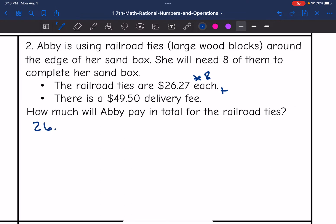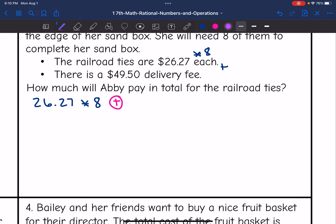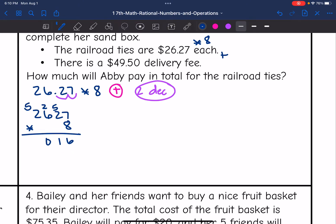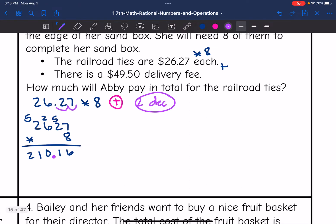Let's start with 26.27 times eight. A positive times a positive will give me a positive, and I have two decimals that I will add back at the end. So now we're going to do 2627 times 8. Eight times 7 is 56, eight times 2 is 16 plus 5 is 21, eight times 6 is 48 plus 2 is 50, and then eight times 2 is 16 plus 5 is 21. And I have to add my two decimal spaces back in. So she is going to pay $210.16 for eight railroad ties.